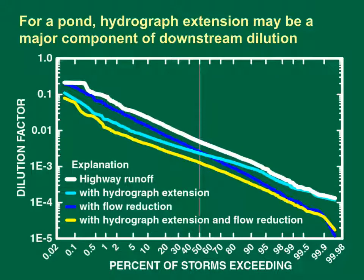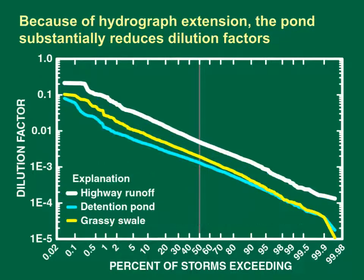For a pond, however, hydrograph extension may be a major component of downstream dilution. This graph shows the potential effectiveness of a detention pond for modifying downstream storm flows. The axes follow the same scales as the previous graph. The white line shows dilution factors without BMP treatment; the light blue line represents stochastic hydrograph extension from a pond ranging from 0 to 18 hours; the dark blue line represents stochastic flow reduction; and the yellow line shows dilution factors when both extension and reductions are modeled. Because of hydrograph extension, the pond substantially reduces dilution factors.